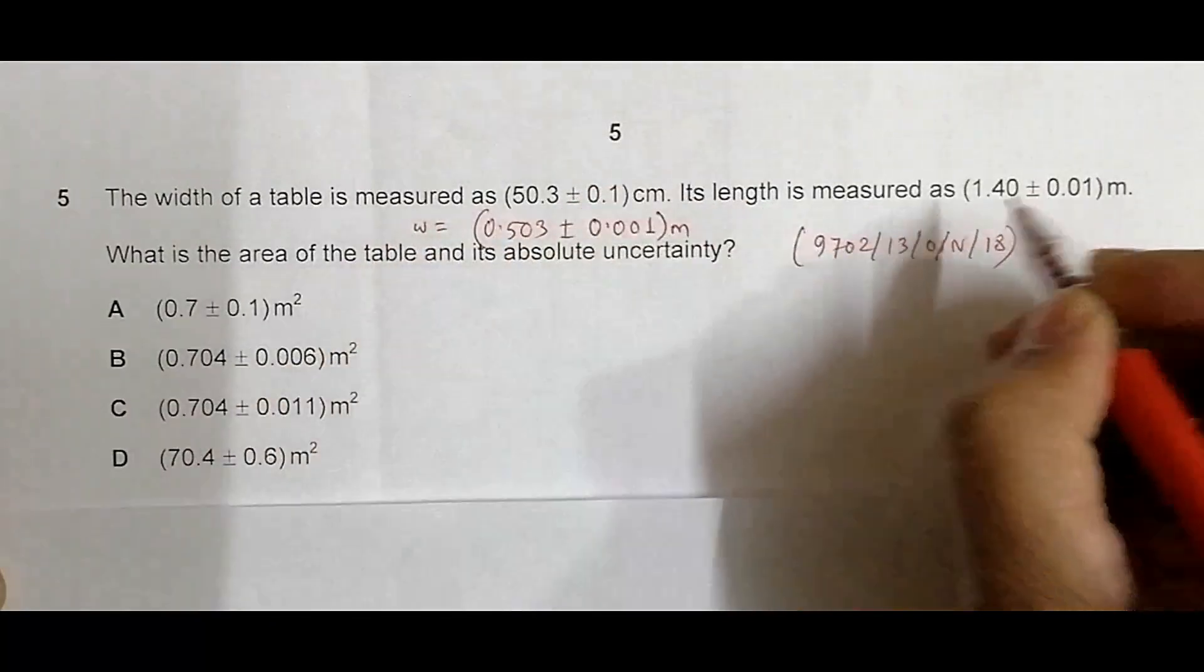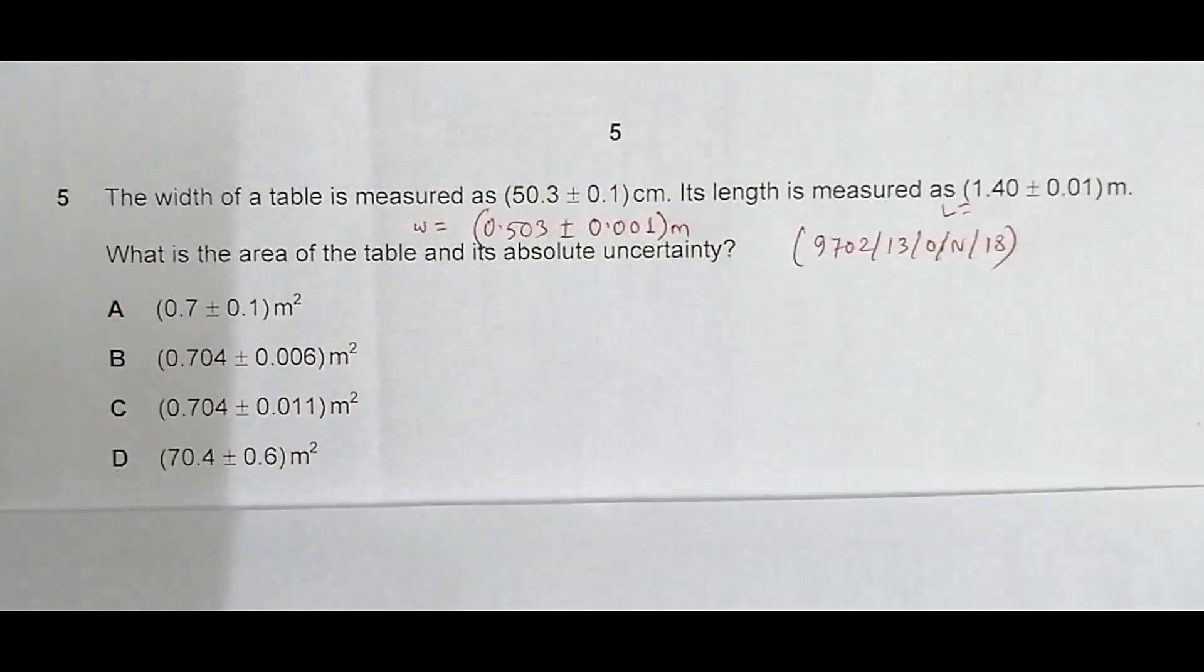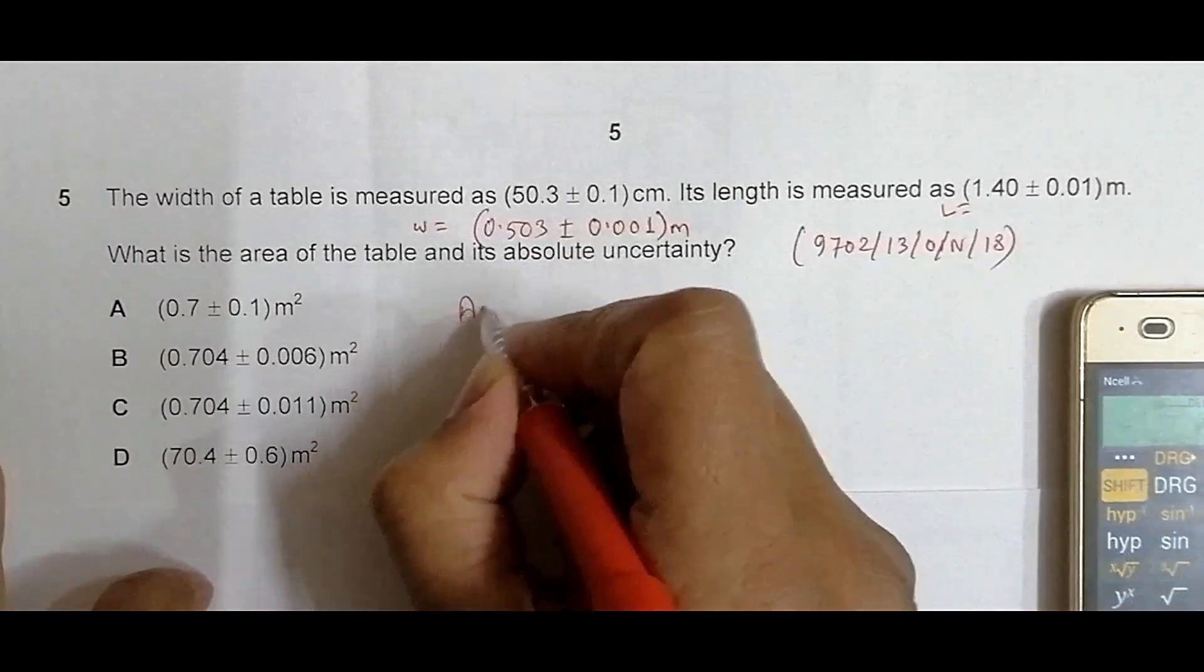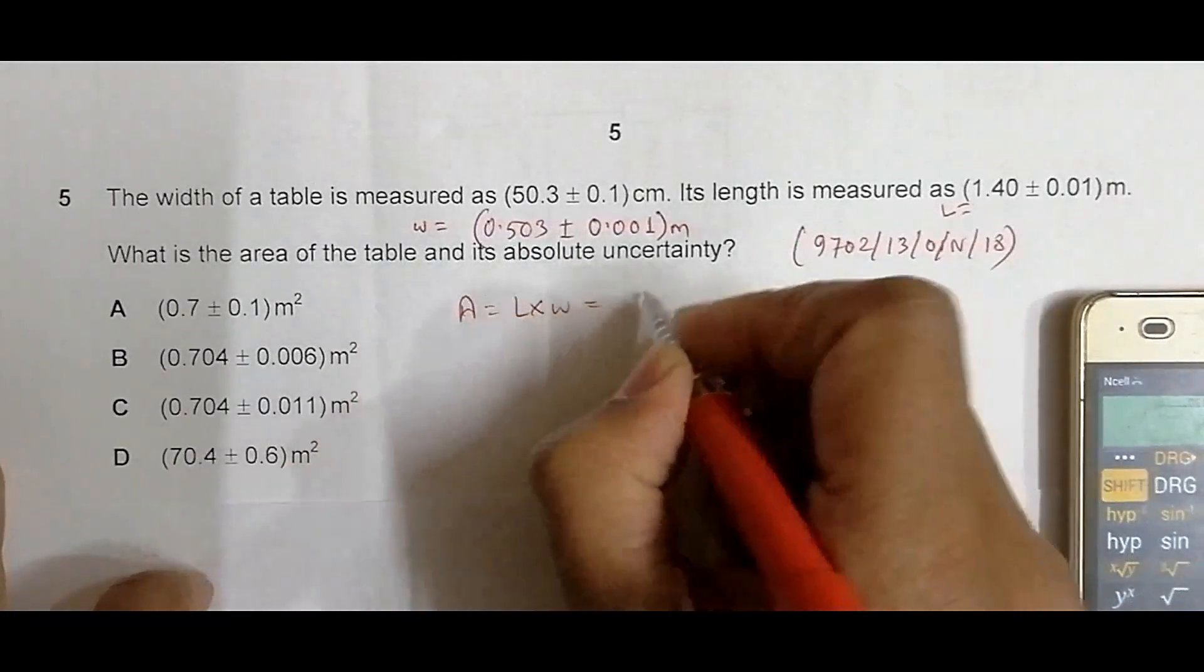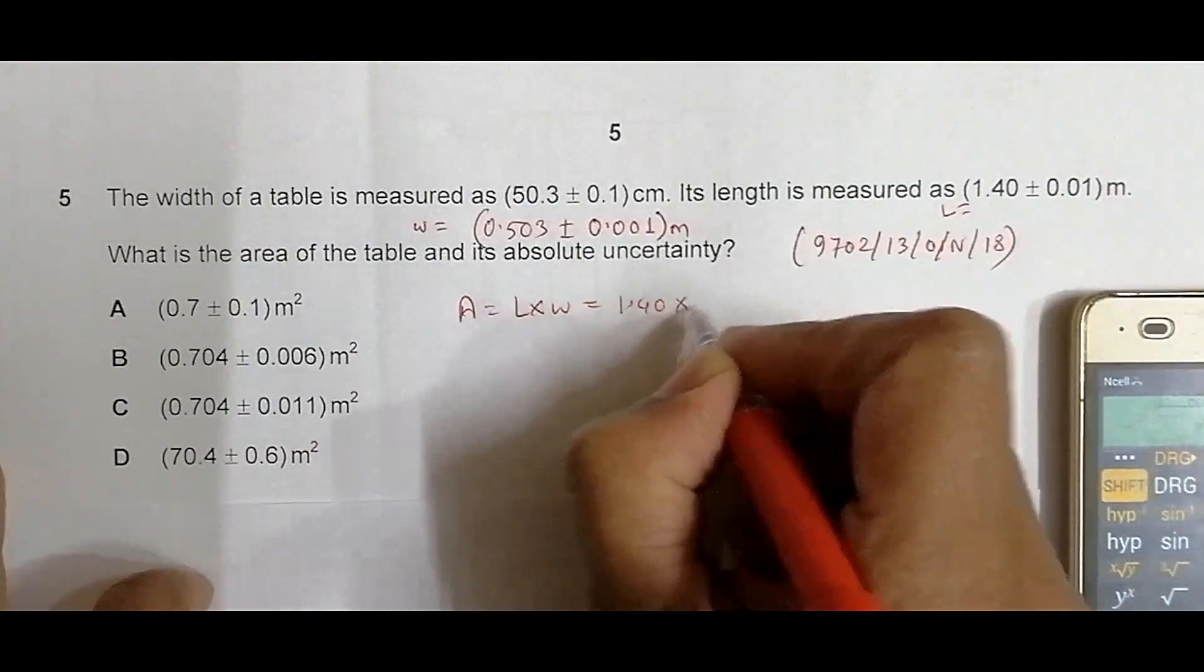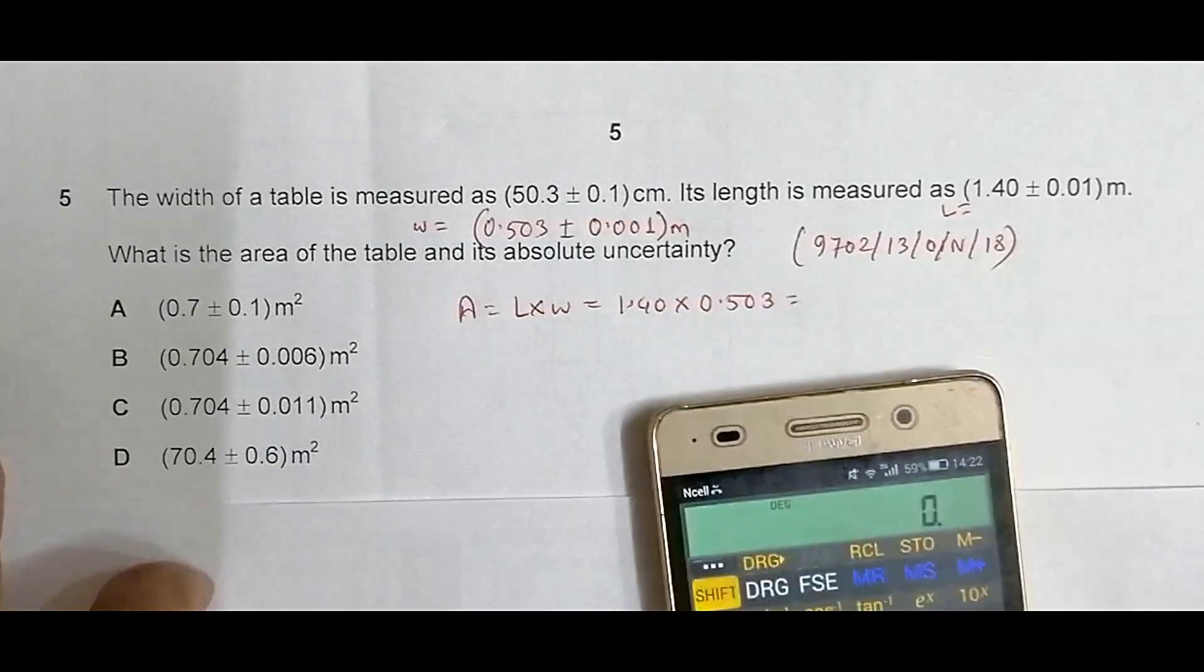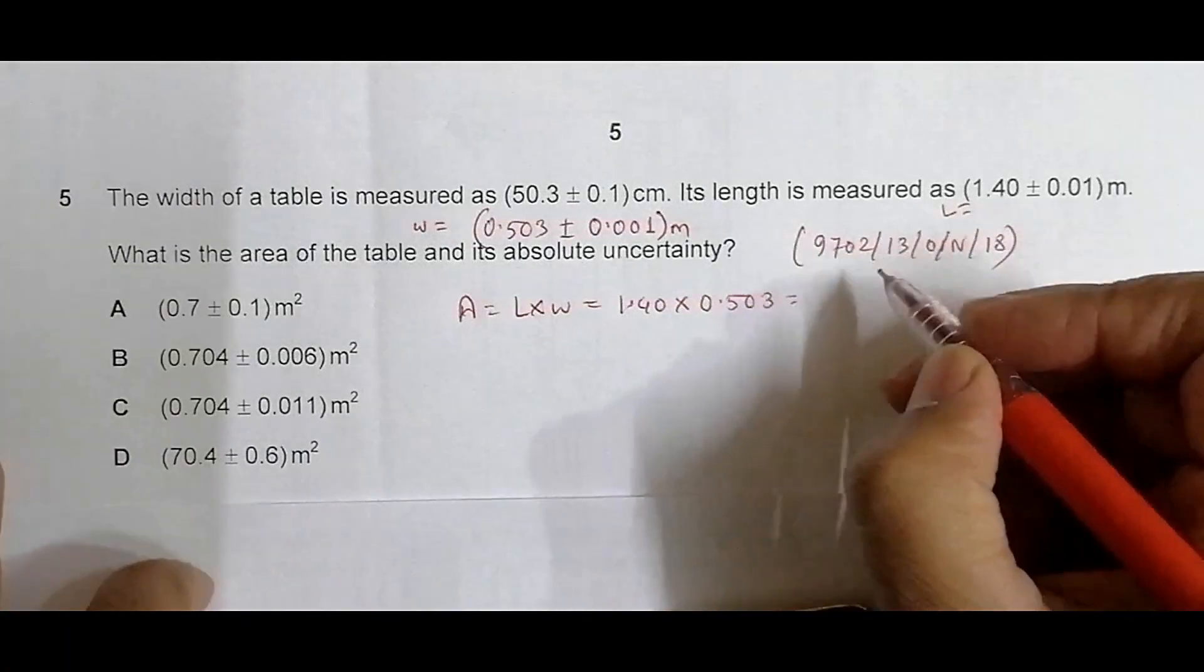The width is equal to 0.503 meters and the length is equal to 1.40 meters. Now the area is given by the product of these two quantities. Let me use my calculator here. Area will be L times width, equal to 1.40 into 0.503, equal to 0.7042 meter squared.